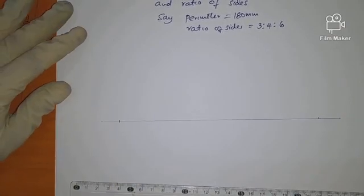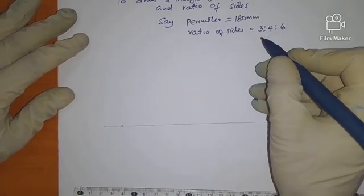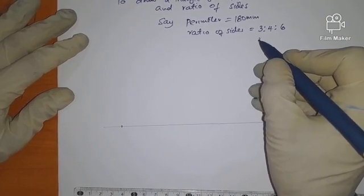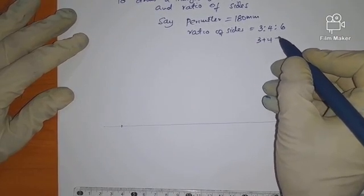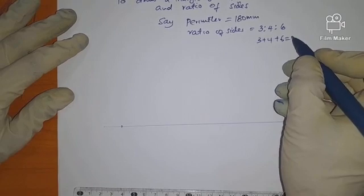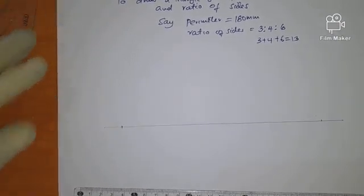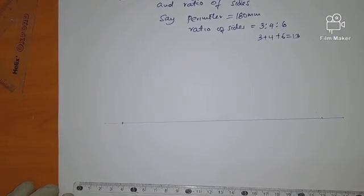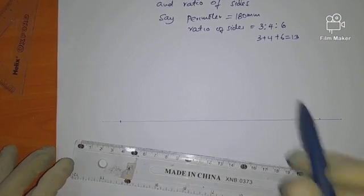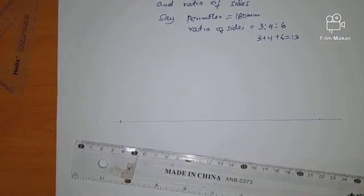To have divisions such that the divisions are going to be 3 plus 4 plus 6 which is 13 divisions. These 13 divisions are what we are going to get the sides from.